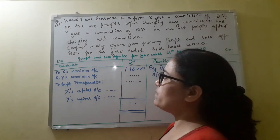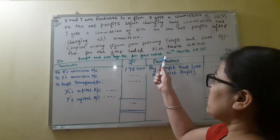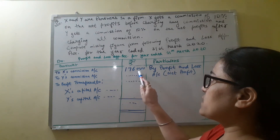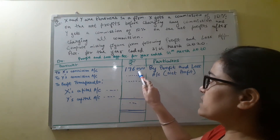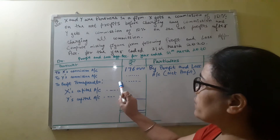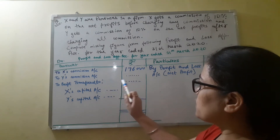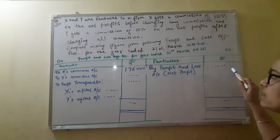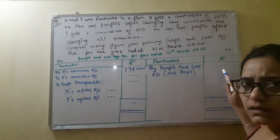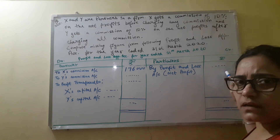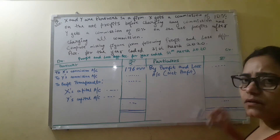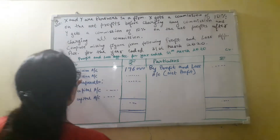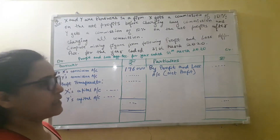Now we will see the question. The profit and loss appropriation account is given and one figure is already given — that is X's commission is 1,76,000. We have to find out Y's commission value, the total profit, the share of X and Y in profit, and the net profit coming from the profit and loss account.